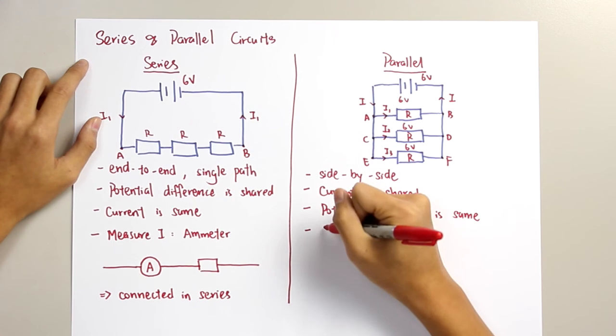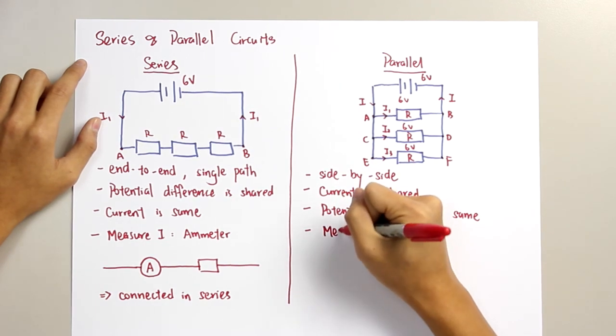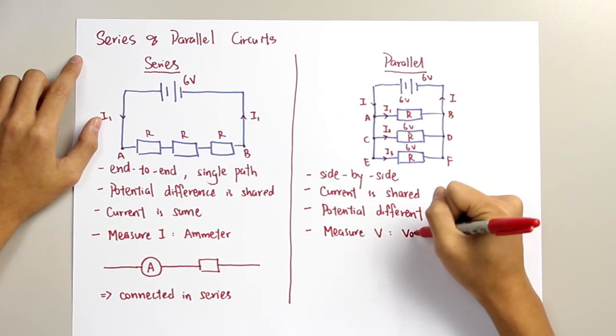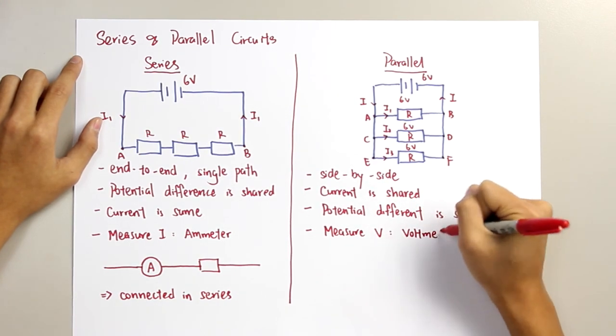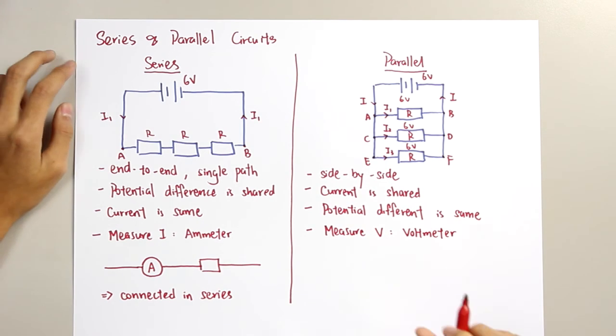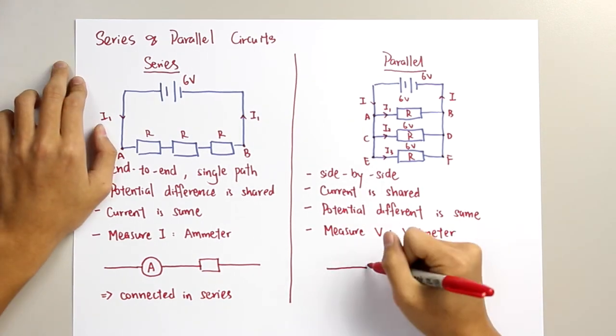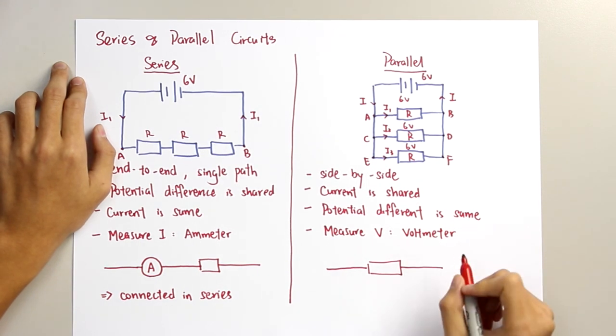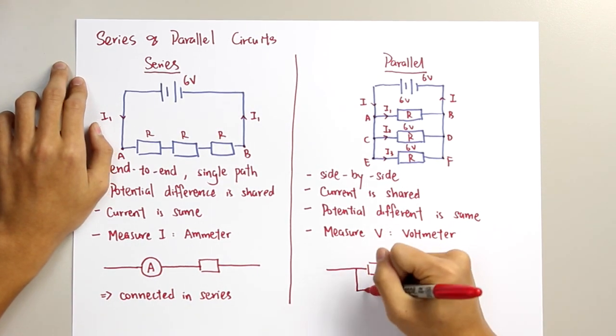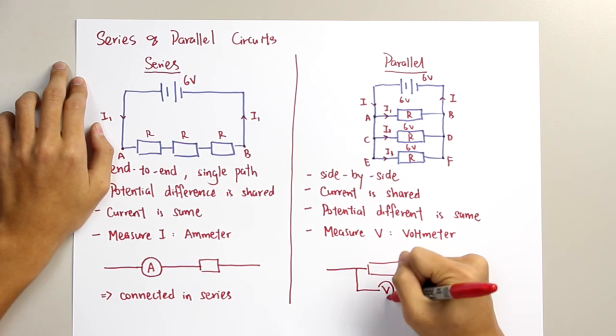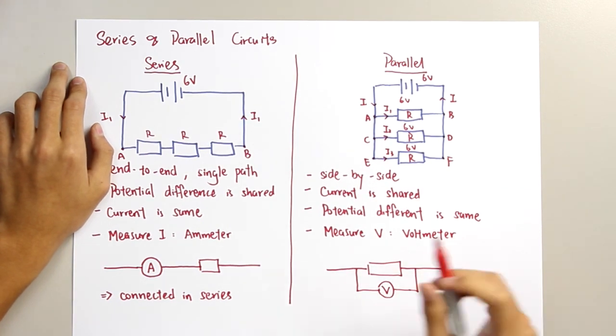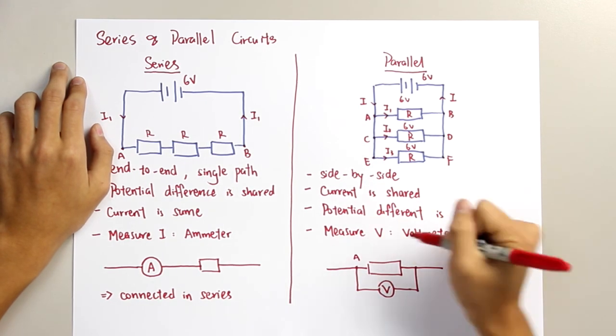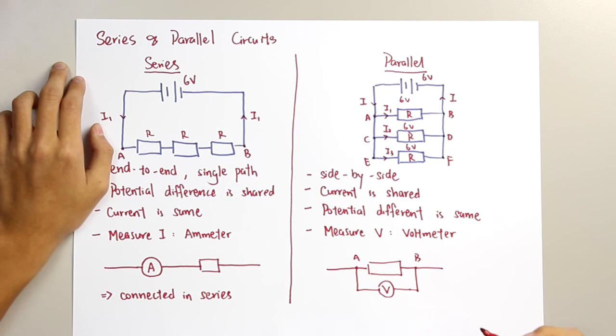Whereas, for parallel circuit, when we measure the potential difference, we use the voltmeter. And so, if we measure a potential difference across one component, the voltmeter should be connected in parallel, so that the potential difference across point A and point B can be measured.